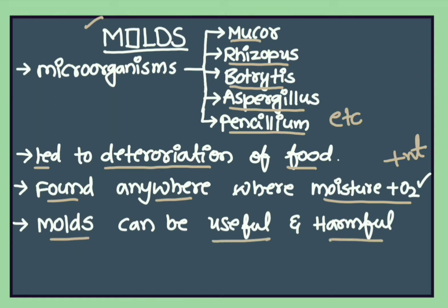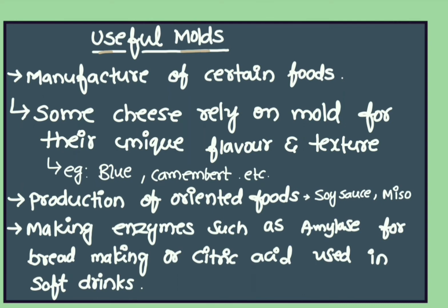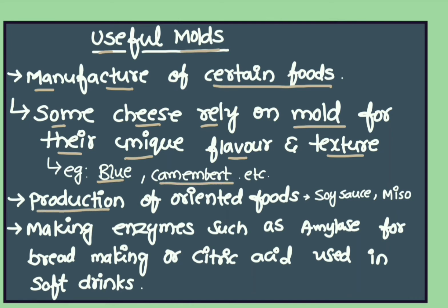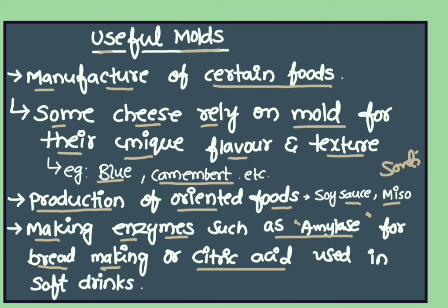Molds can be useful and harmful. Let us look at useful molds. Molds are useful in the manufacture of certain foods. For example, some cheese use mold for their unique flavor and texture, such as blue cheese and camembert. They are also useful in production of fermented foods such as soy sauce, miso, and suntea. They are involved in making enzymes such as amylase for bread making, or citric acid which is used in soft drinks.